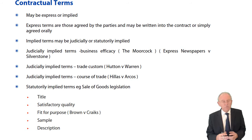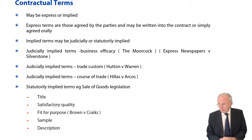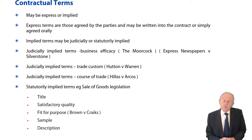We're still on contract law and we're now looking at contract terms. I've already explained to you the difference between those terms that are fundamental to the contract — conditions — and those that are superficial to the contract — warranties. The victim of a breach of condition is entitled to treat the contract as discharged and sue for damages. If you're the victim of a breach of warranty, the contract does survive, but you can claim damages.